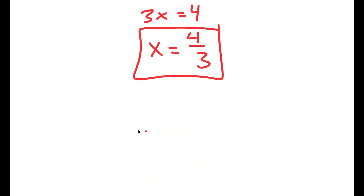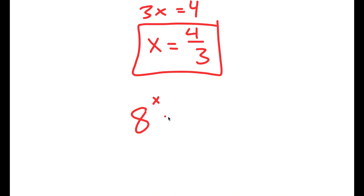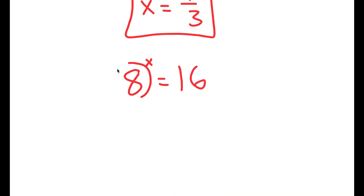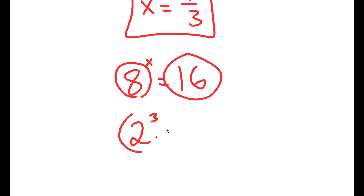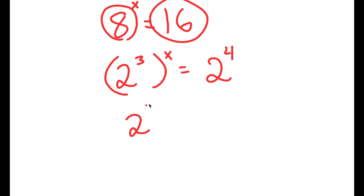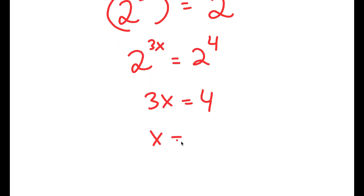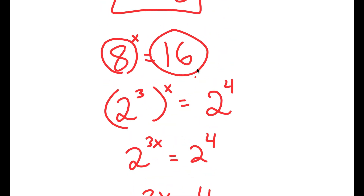There is actually another way to solve this problem. At the start, I can rewrite both sides in base 2. So 8 is 2 to the power of 3, giving 2 to the power of 3 to the power of x, and 16 is 2 to the power of 4. This simplifies to 2 to the power of 3x equals 2 to the power of 4, meaning 3x equals 4, and x equals 4 over 3. This is a much simpler method of solving this problem.